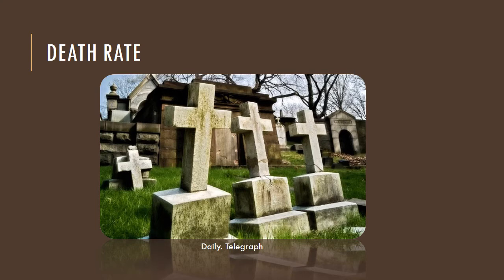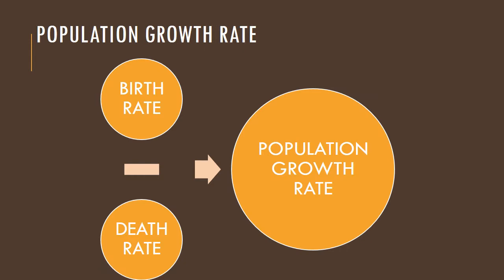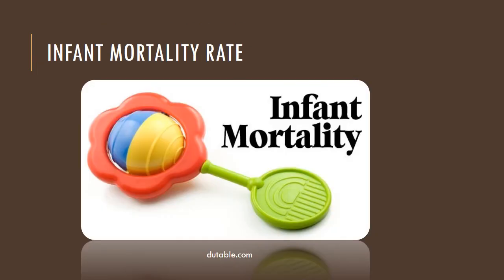Population growth rate refers to the increase in the number of people in a country in one year. The formula we use is: Population Growth Rate = Birth Rate − Death Rate. For example, if a country's birth rate is 19 and its death rate is 15, then the population growth rate equals 19 minus 15, which gives us 4. That country's population growth rate is therefore 4.